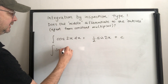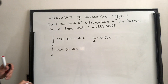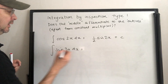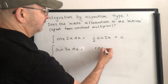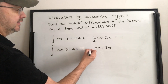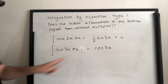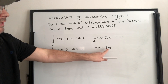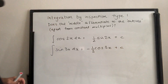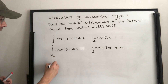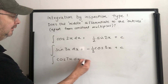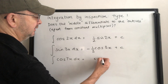So the integral of sin of 3x: cos of 3x would differentiate to something like sine. Cos differentiates to minus sin, so we need to account for the negative. Then the 3x differentiates to 3; get rid of it with a third. For cos of 7x, the integral is one seventh sin of 7x, plus c.